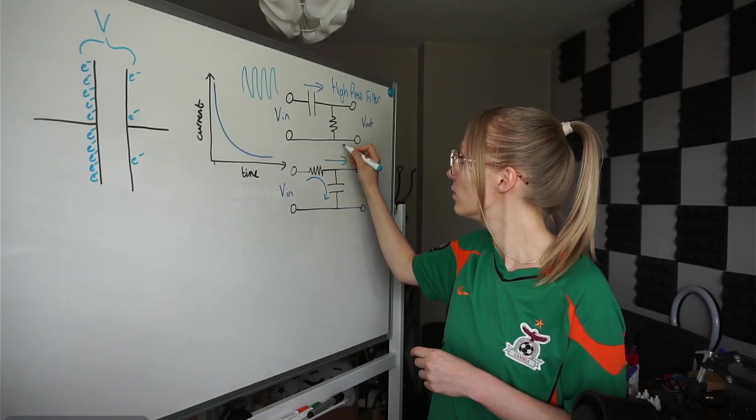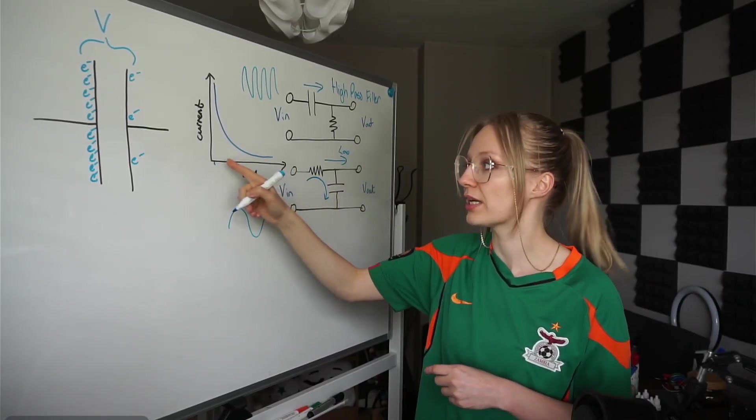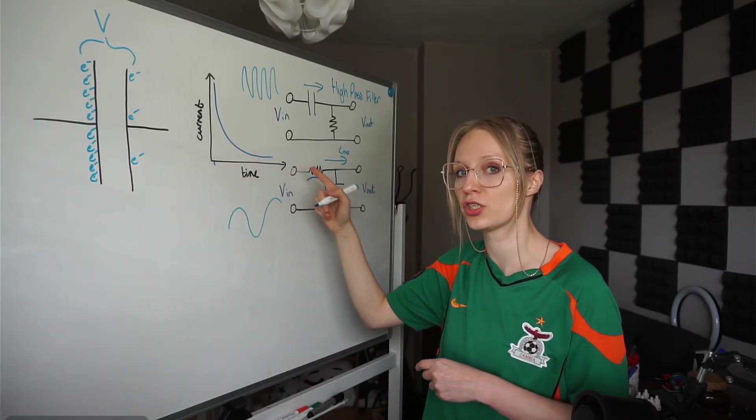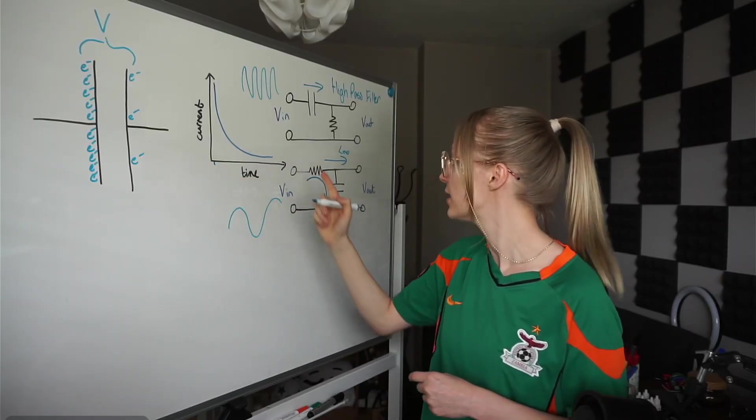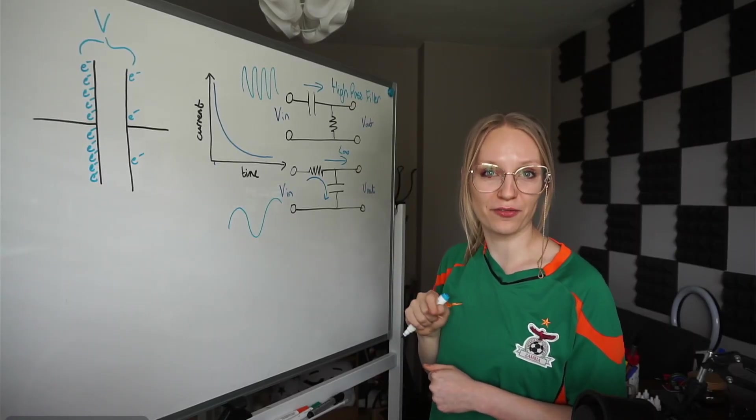Which allows the low frequency, the slow waves like this, where we give them loads of time to charge and discharge, which means low current. We allow them to pass through easily. And we call this then a low pass filter.